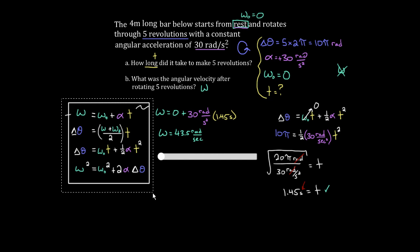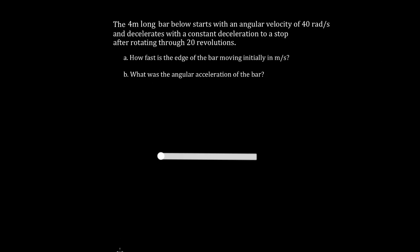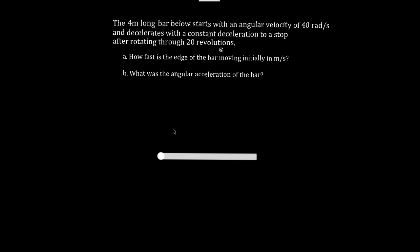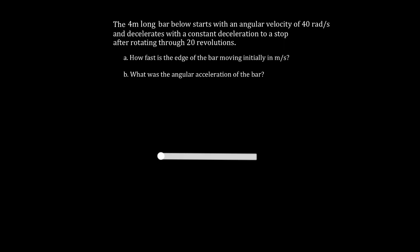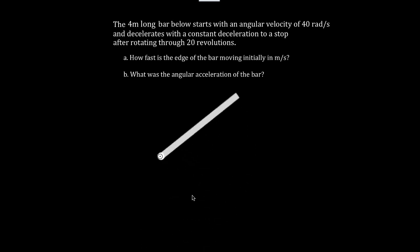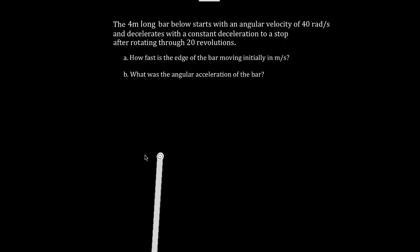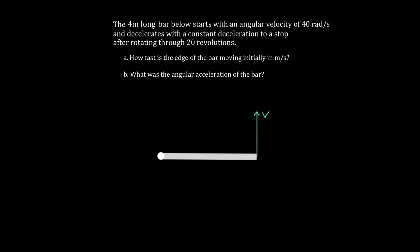Let's do another example. This four-meter-long bar starts with an angular velocity of 40 radians per second, but decelerates to a stop after rotating 20 revolutions. Part A asks: how fast is the edge of the bar moving initially, in meters per second? In other words, the point at the tip of the bar — what is its linear speed initially?